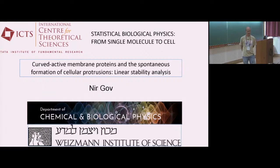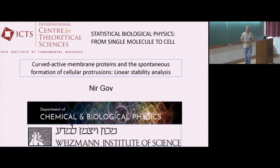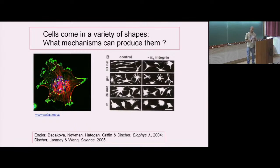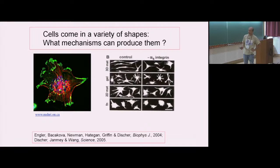Today we'll talk about some interesting aspects of how cells produce patterns on their surface — specifically how they initiate structures like protrusions. Cells come in many different shapes, and we can ask what gives them these shapes, both at the level of the whole cell and when zooming in on specific regions.